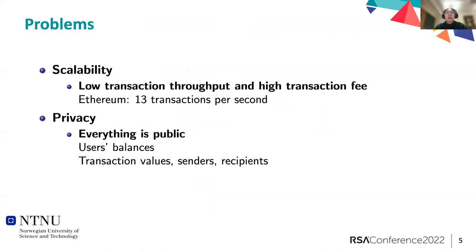Both Ethereum and Bitcoin share the same problems of scalability and privacy. They have a low transaction throughput and a high transaction fee. For example, Ethereum can only handle 13 transactions per second. They don't have privacy, so everything is public on the blockchain — including users' balances, transaction values, and the addresses of senders and recipients.